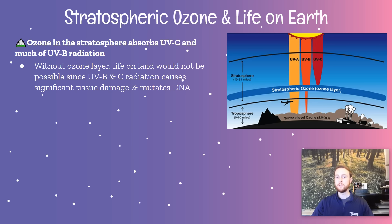Without the existence of this stratospheric ozone layer, which emerged some people estimate around 600 million years ago, life would have never been able to actually expand out of the oceans on Earth and onto the land. The radiation that organisms would have been exposed to is believed to have been too high to enable life to exist on land. This ozone layer is just critical to organisms living on Earth.